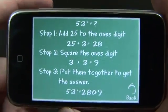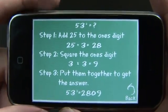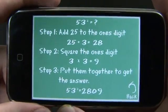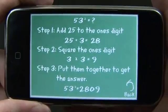Because if I click on View Lesson, I'll see that if I add 25 to the 1's digit and square the 1's digit, then put them together, I'll get the answer.